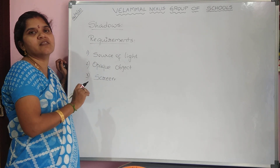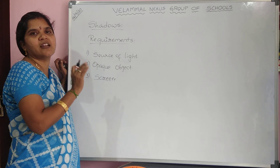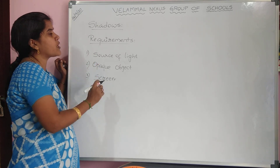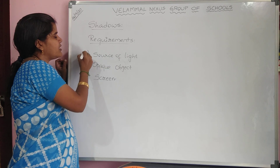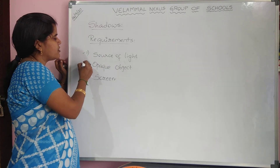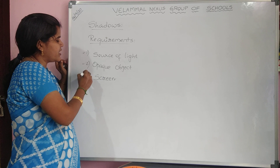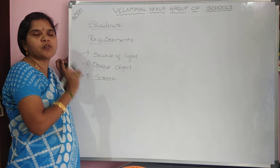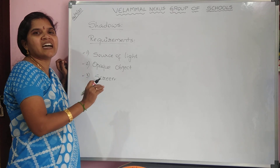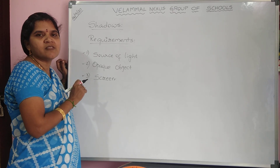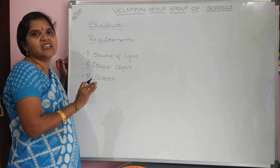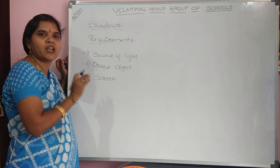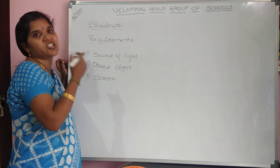That dark patch which forms on the screen is nothing but the shadow. Shadows do not have any color — they are dark patches. So requirements for a shadow are: source of light, opaque body, and a screen. If the screen is not present, does that mean shadows do not occur? No — the screen is only there for visibility. Shadows will still occur, but the screen is where we can see them.